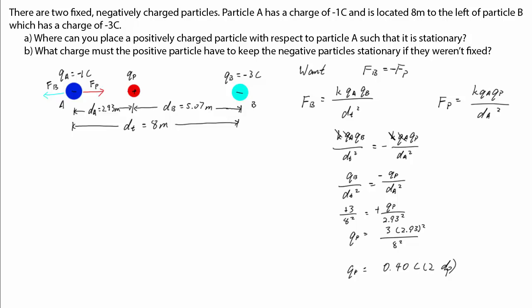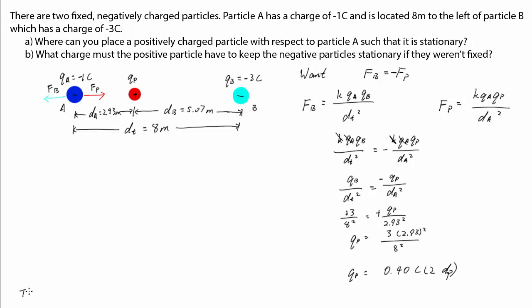Remember that due to the difference in distance, the positive particle must have a smaller charge than the negative particle. 0.4 coulombs is smaller than 3 coulombs. So this condition is satisfied and our answer is plausible.